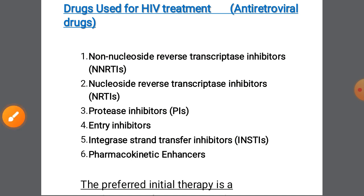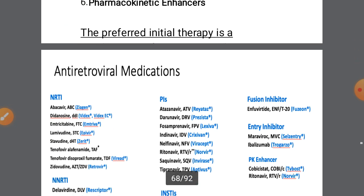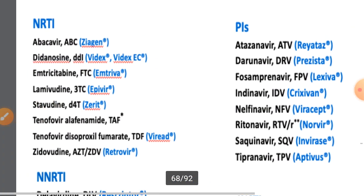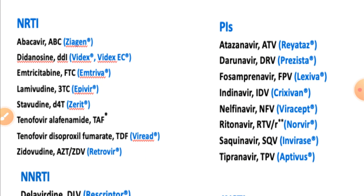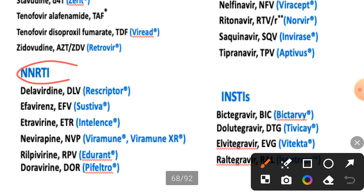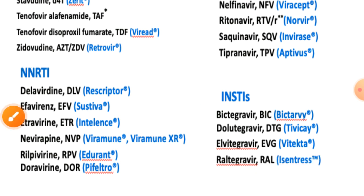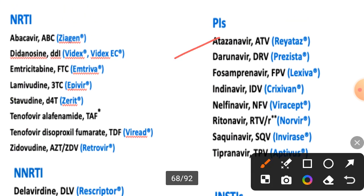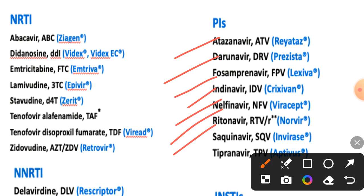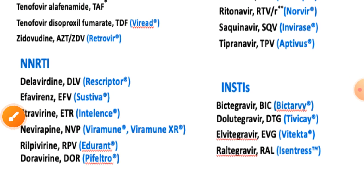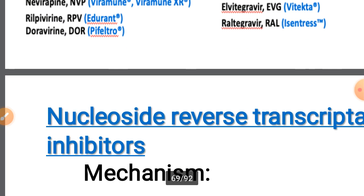This classification is mentioned in the shared presentation. The drug names are: for nucleoside reverse transcriptase inhibitors — abacavir, didanosine, emtricitabine, lamivudine, stavudine. For non-nucleoside reverse transcriptase inhibitors — delavirdine, efavirenz, etravirine, nevirapine, etc. Protease inhibitors include atazanavir, darunavir, fosamprenavir, indinavir, nelfinavir, ritonavir, saquinavir, etc. Integrase strand transfer inhibitors include bictegravir, dolutegravir, elvitegravir, and raltegravir — all ending in '-tegravir.'